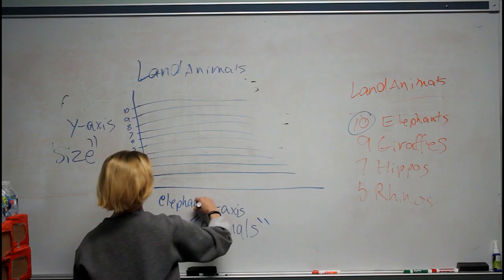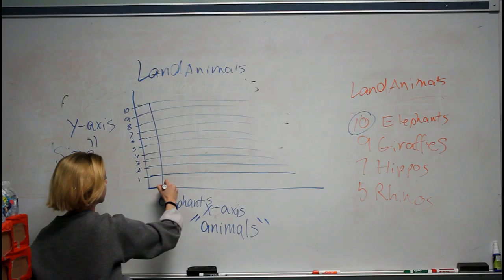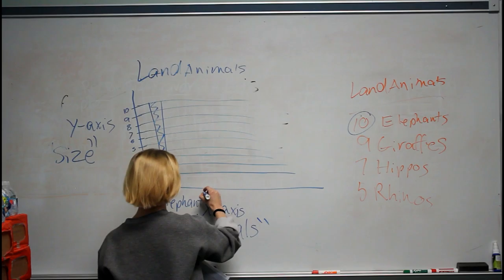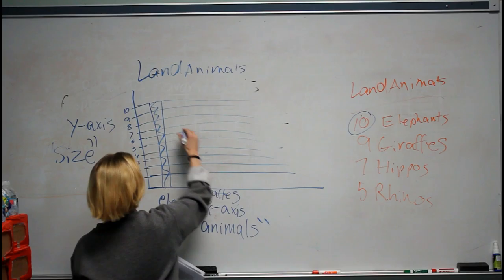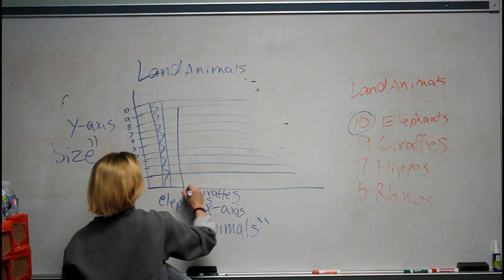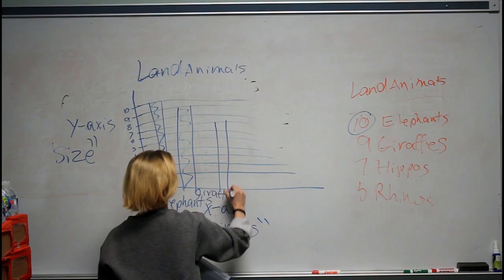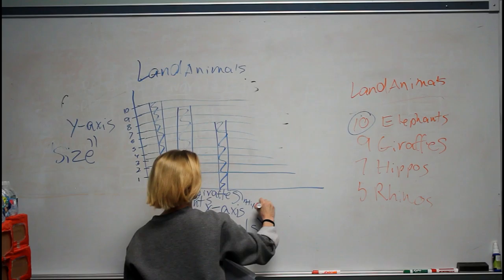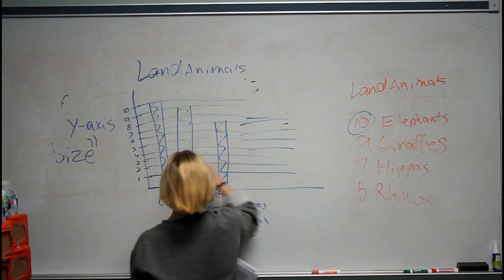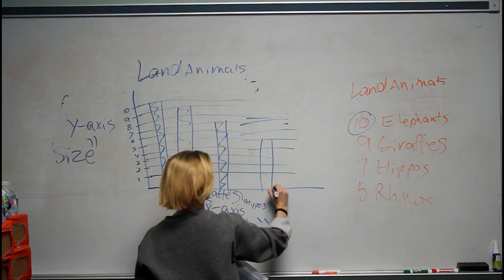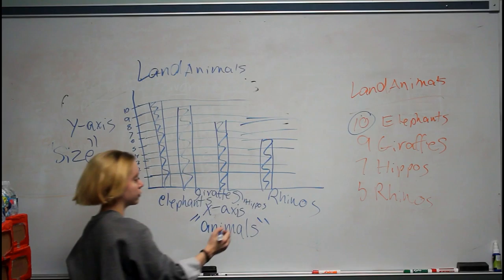Then we get to make our actual bars. Starting with elephants — since we have 10 — we make two lines all the way up, then color it in. Second is giraffes at 9, draw two bars, color it in. We have hippos at 7 — draw bars, color it in, label it hippos. Our last one is rhinos at 5 — count to 5, draw all the way over, color it in, write rhinos. That's our second graph.